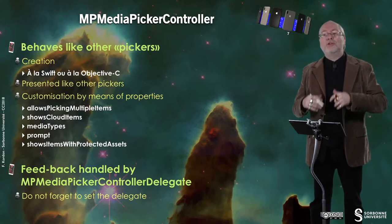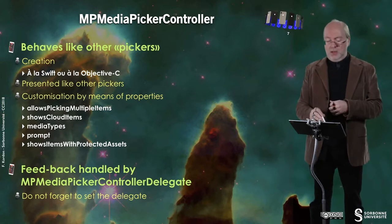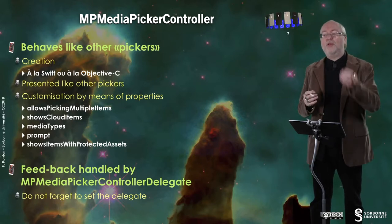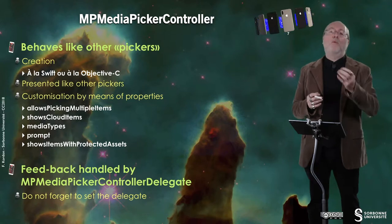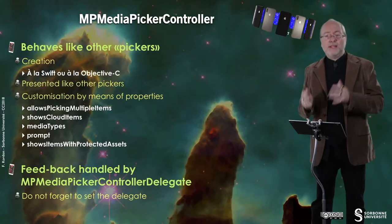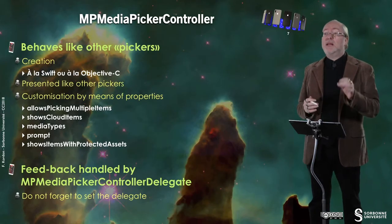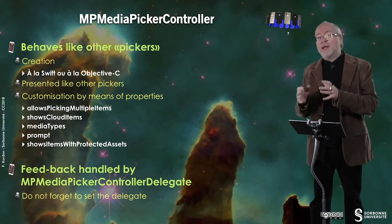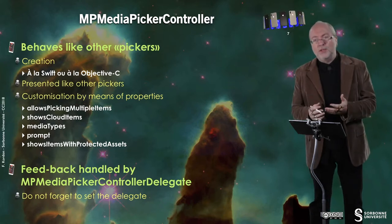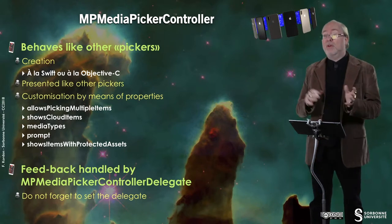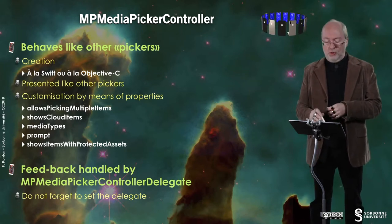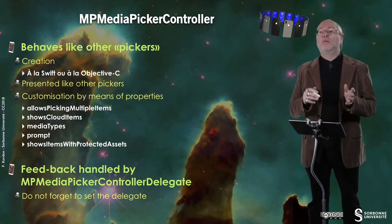You can customize the picker with properties. There is a Boolean property that allows the user to select multiple items or just one. You also have a shows cloud items attribute, meaning music on iCloud will be displayed if an internet connection is available. You can also set media types, set a prompt message, and show items that are protected.